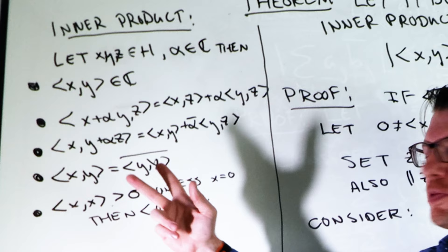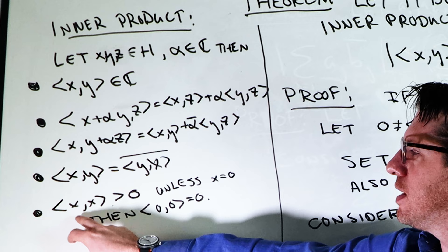If we swap the two vectors, then the result is the same complex number, but conjugated. And finally, the scalar product between the vector and itself is always positive, unless that vector is zero.